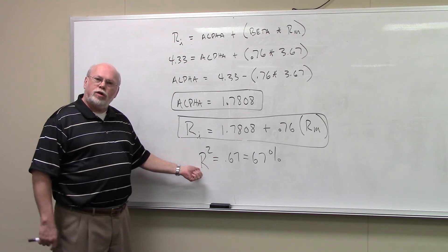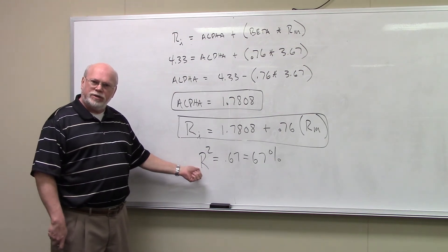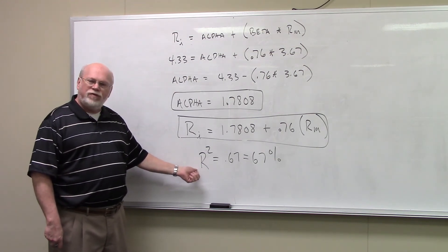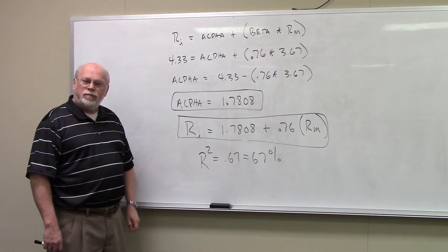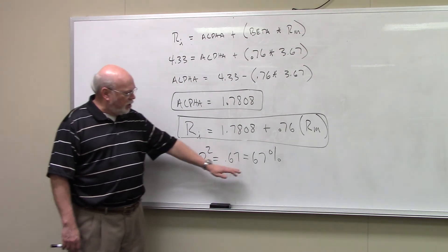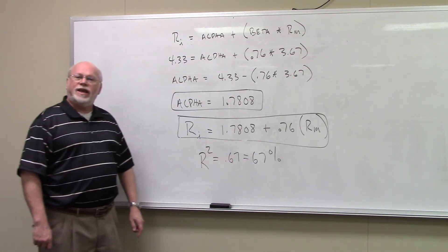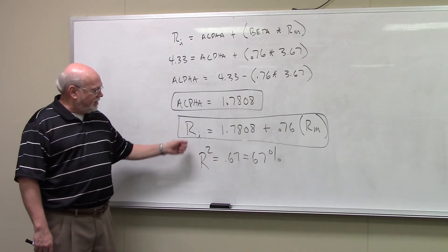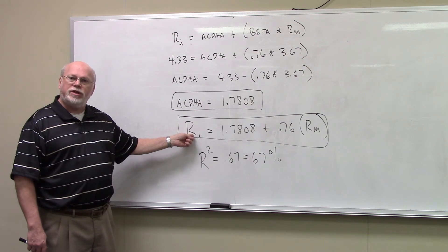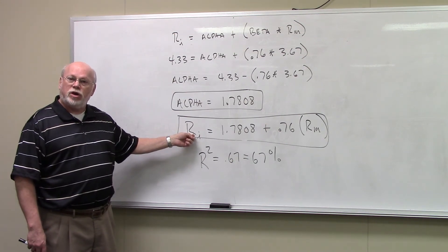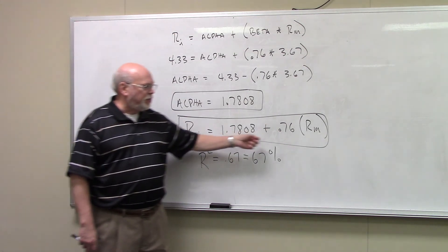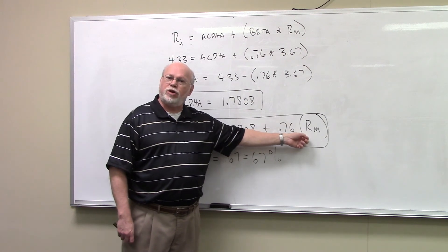Remember, in an earlier statistic that we calculated with these two distributions, we found that the R squared, the coefficient of determination, was .67 or 67%. And what that means is that 67% of the variation in the return of the security is explained by variation in the return of the market.